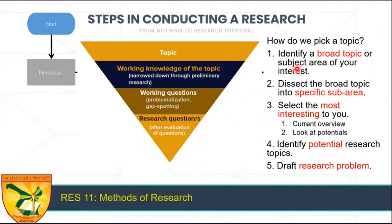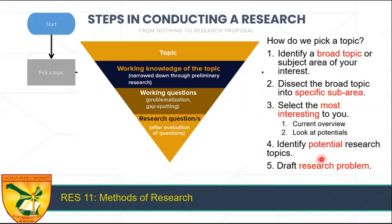So these are the steps before jumping to the research problem. One is to identify a broad topic or subject area of your interest. Second is dissect the broad topic into specific sub-areas. Third is select the most interesting sub-area to you, looking at current overview and looking into potentials. Fourth is identify potential research topics. And fifth, draft the research problem.